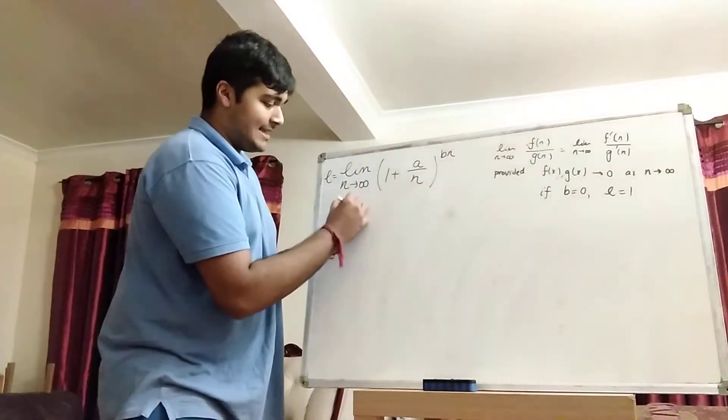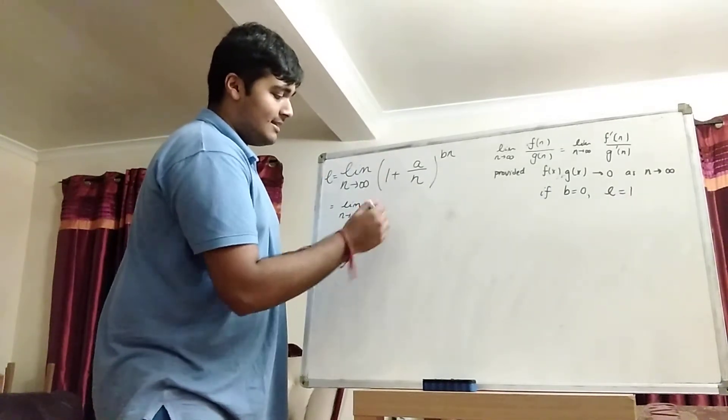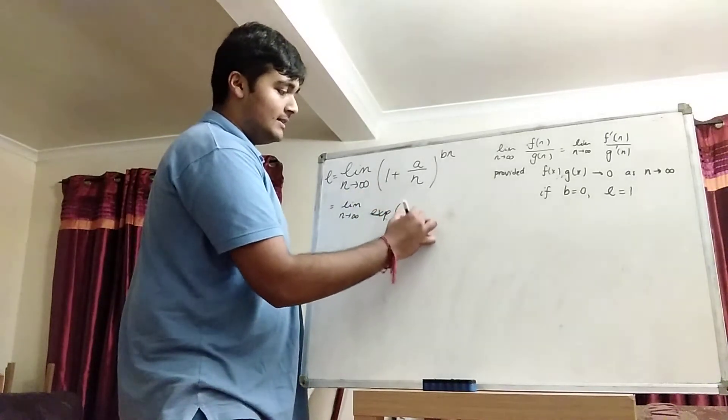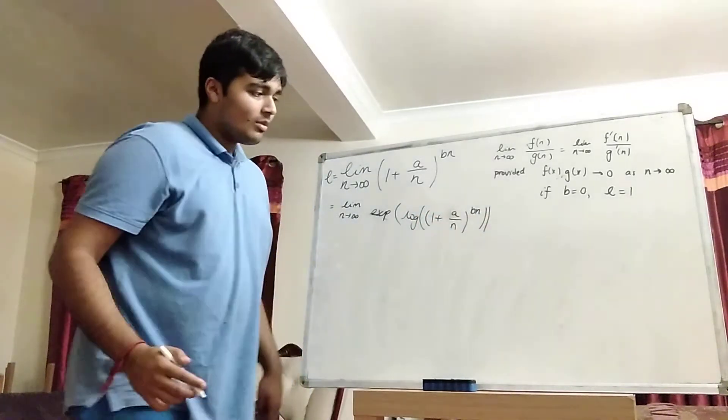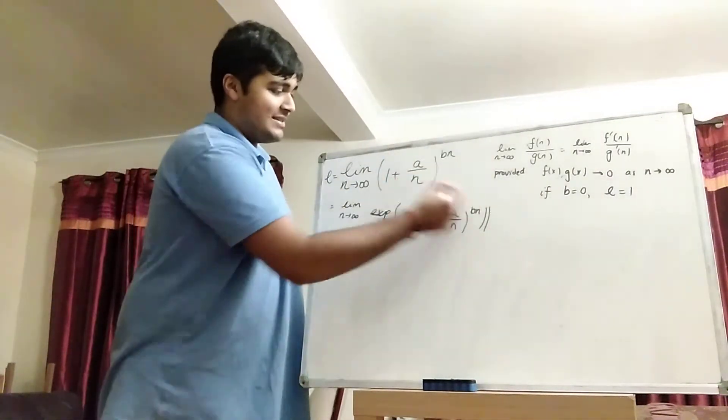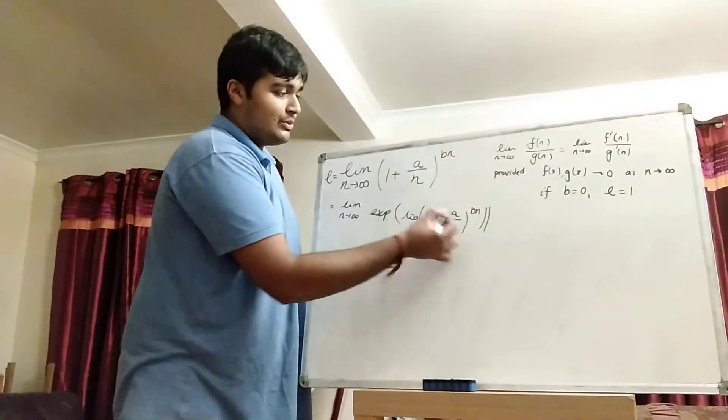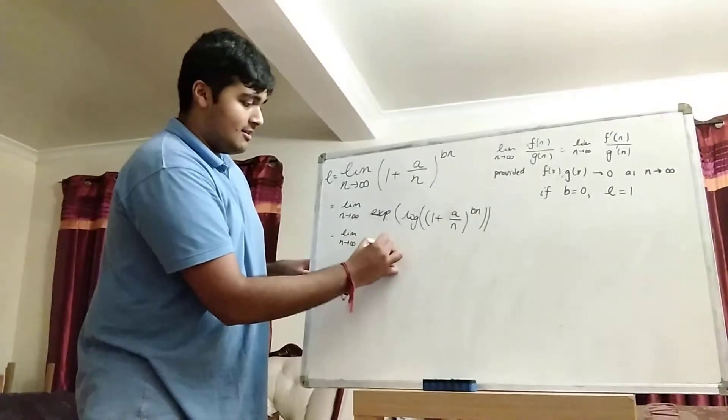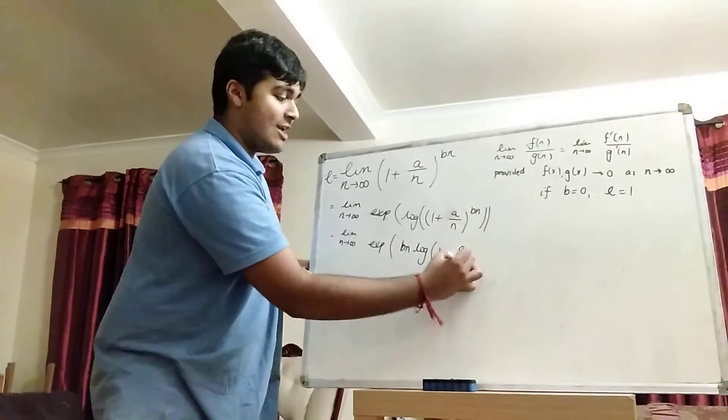Okay, cool. A very standard trick here is to write this as e to the power of something. So this is going to be e to the, which I'm going to write as the exponential function, of the log of 1 plus a over n to the power of bn. Okay, cool. Then, going from there to there, this thing here is the same as this thing here because e and log are inverse functions of one another. Now, using log rules, I can bring this power here outside and into the front of the log. So this is the limit as n goes to infinity of the exponential of bn times log of 1 plus a over n.